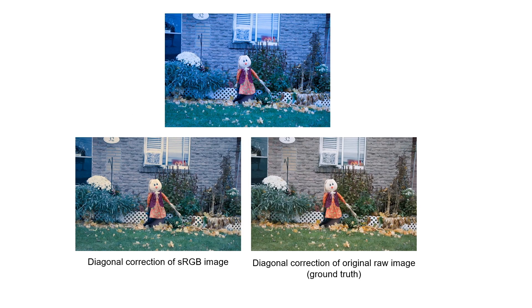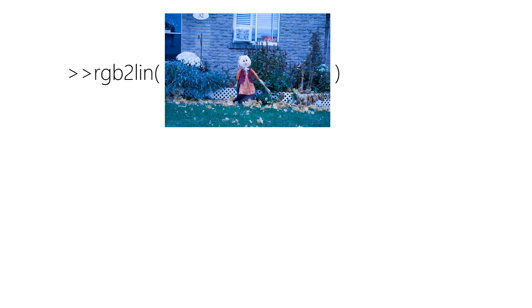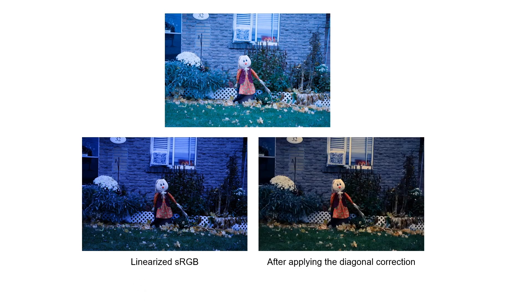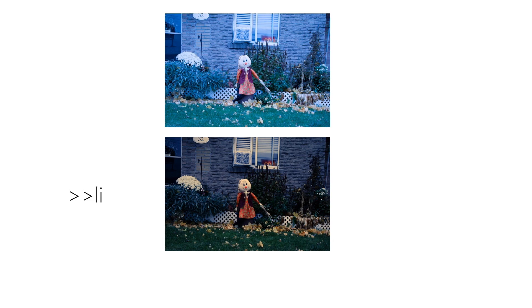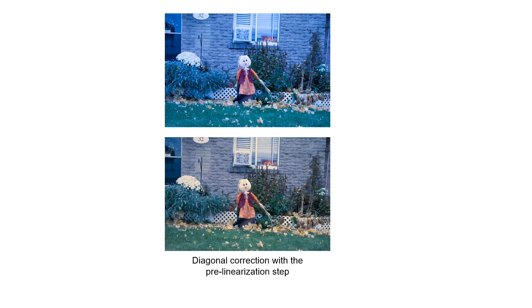Here we show an example. Unfortunately, software such as MATLAB suggests that a simple linearization step — namely an inverse 2.2 gamma — can be used to undo the camera's onboard color manipulation. They recommend to linearize the image, then apply a white balance, then reapply a 2.2 gamma. This simply does not work. The camera's color manipulation is much more complex than a simple gamma function.